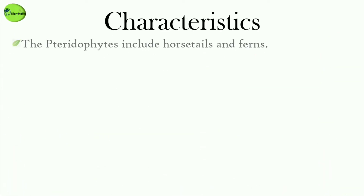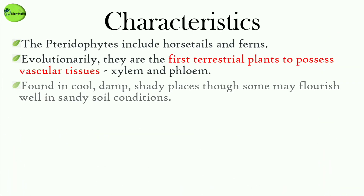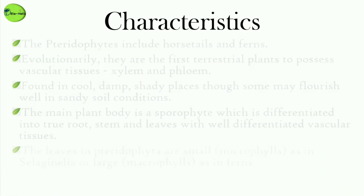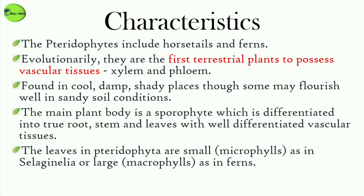The pteridophytes include the horsetails and ferns. Evolutionarily, they are the first terrestrial plants to possess vascular tissues — the xylem and phloem.